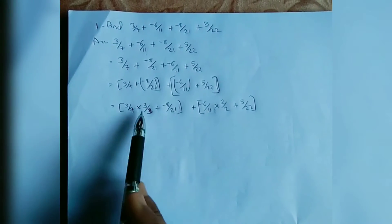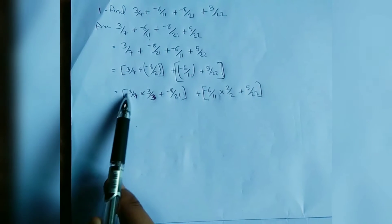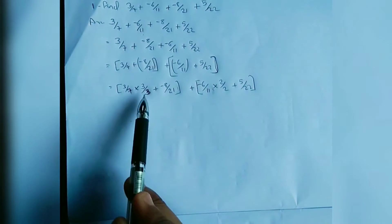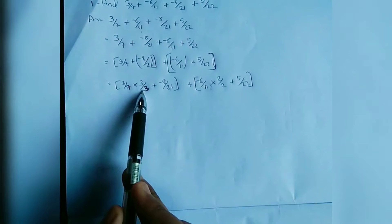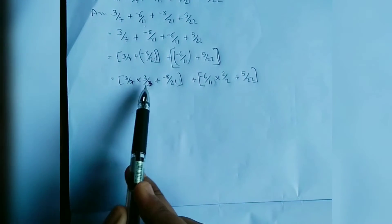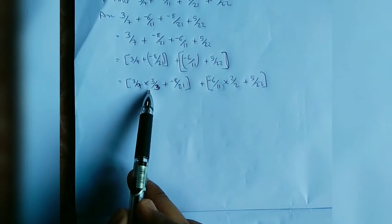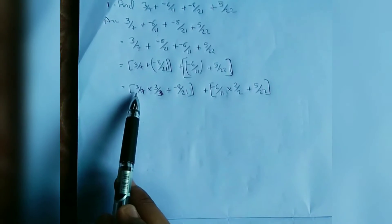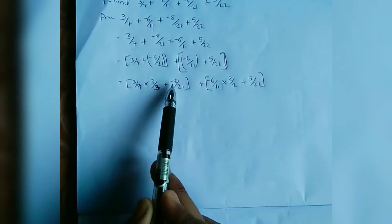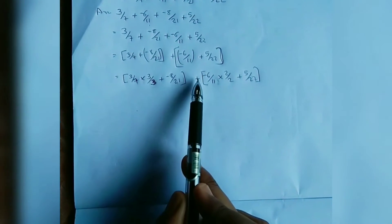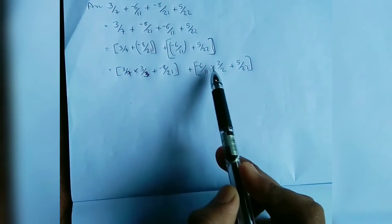21 is 3 times 7, so 3/7 equals 3/7. We multiply 3/7 by 3/3 to get the denominator 21: numerator 3 × 3 by 7 × 3, giving 9/21, plus (−8/21).